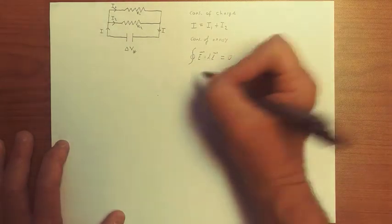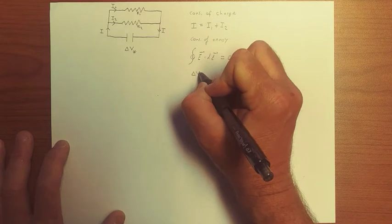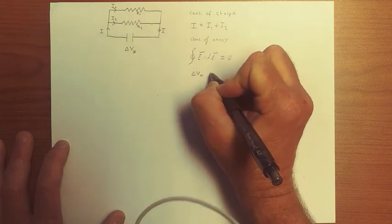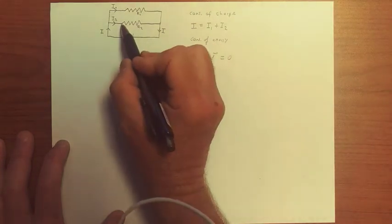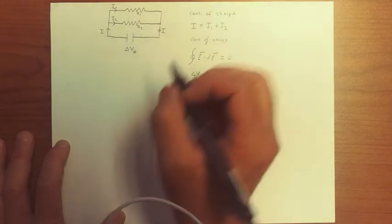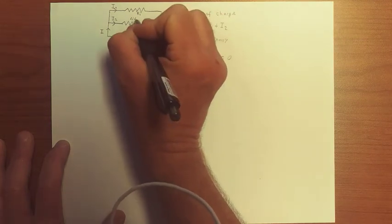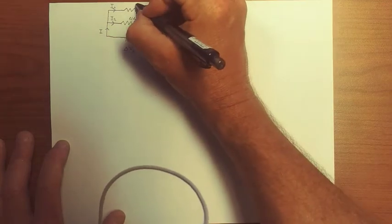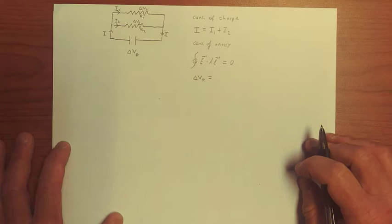So this gives us that in magnitudes delta V star is equal to, say Ohm's law is obeyed here, well, at this point let's just say that there's a voltage difference delta V2 here in magnitude and delta V1 there in magnitude.